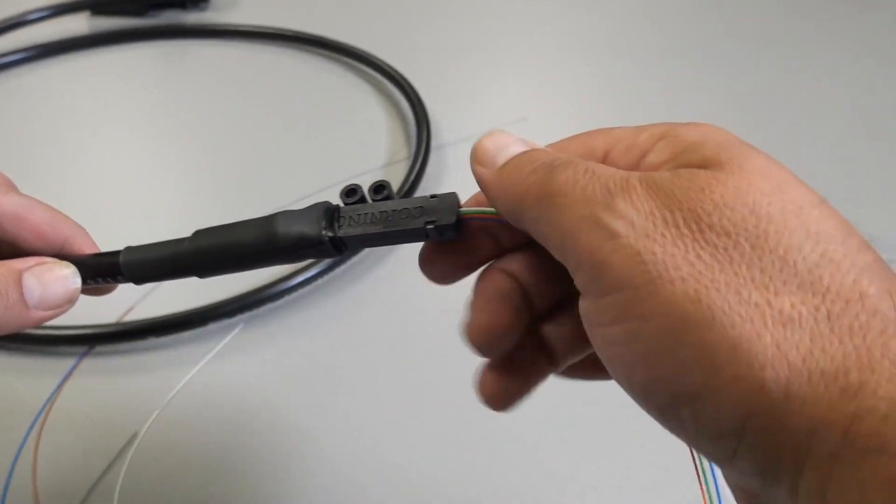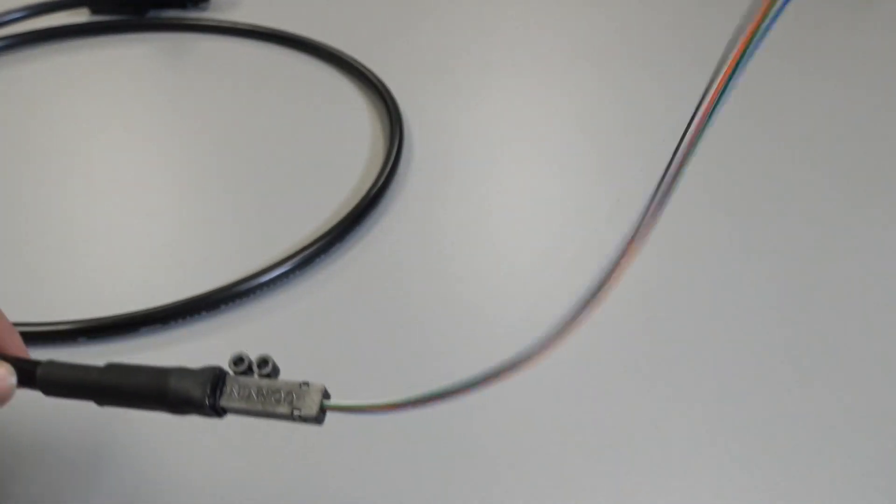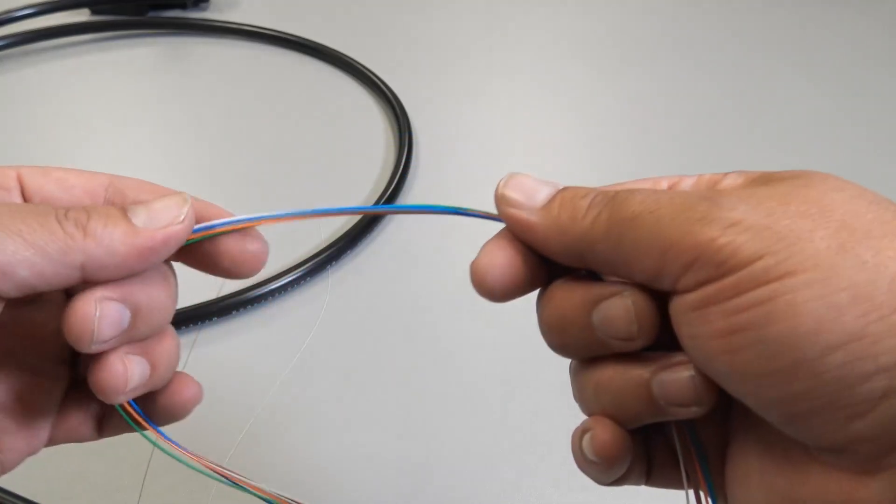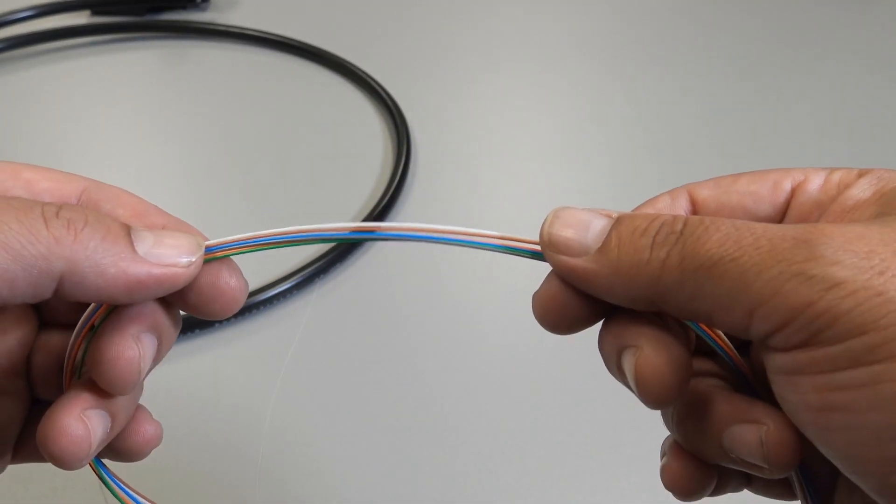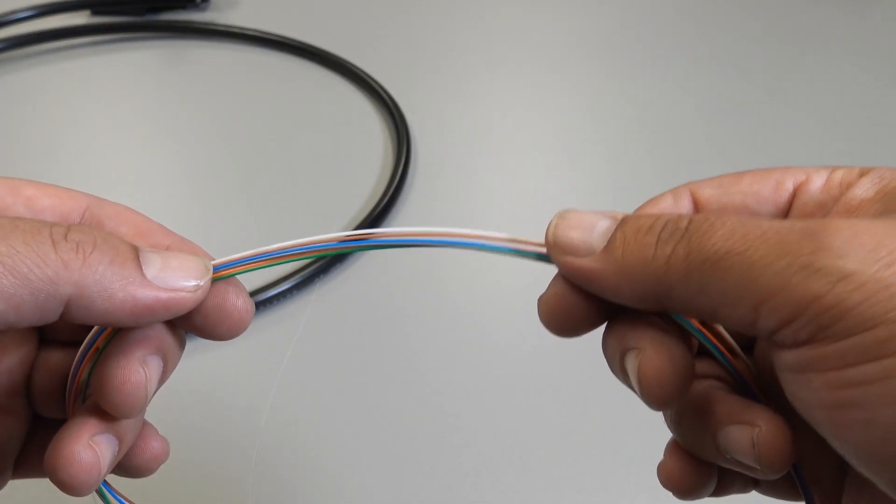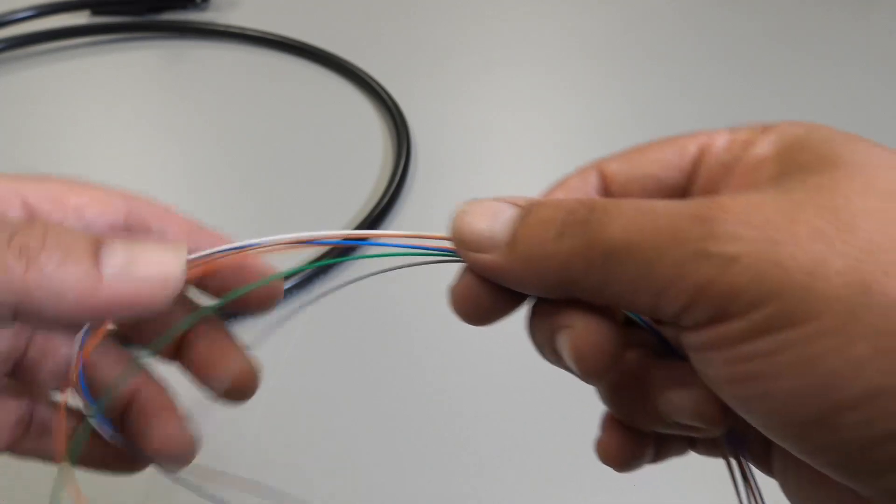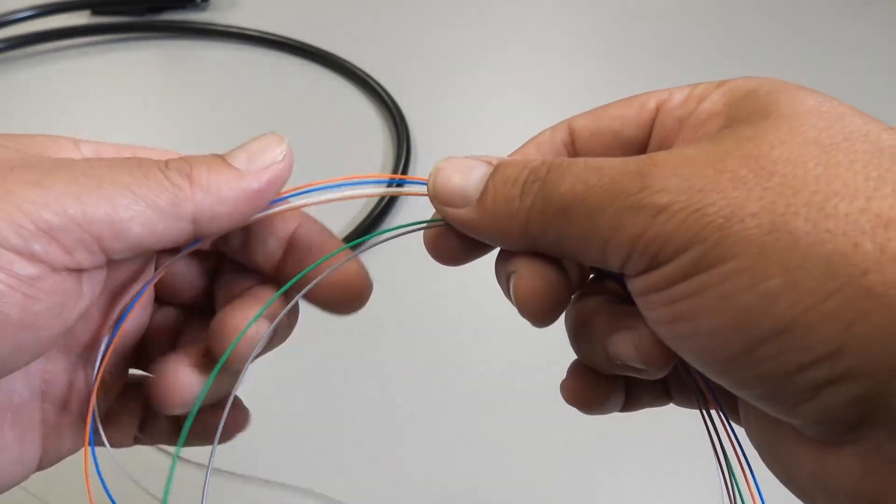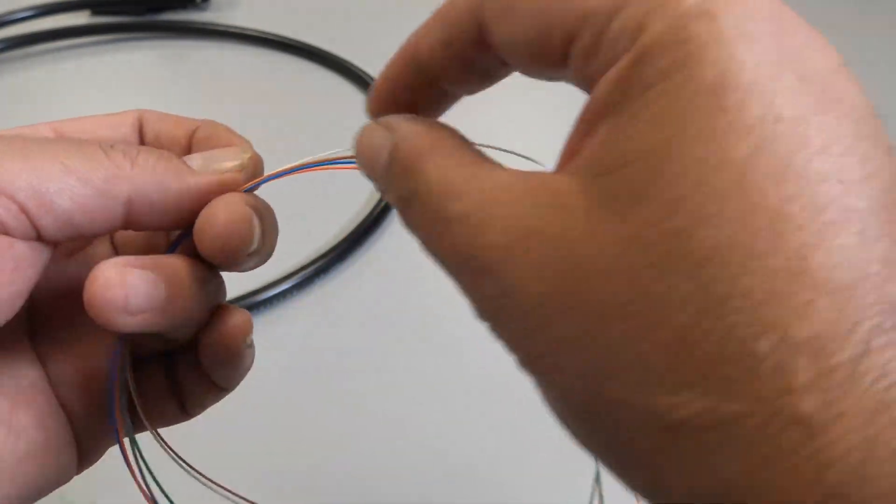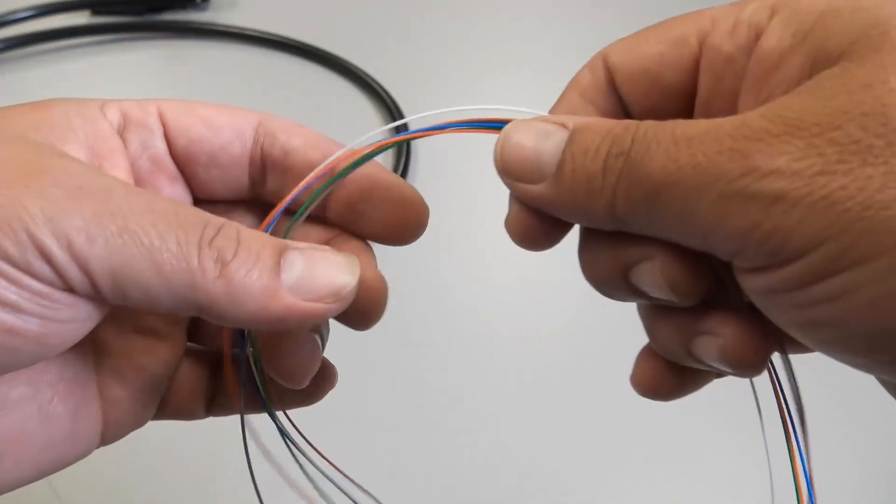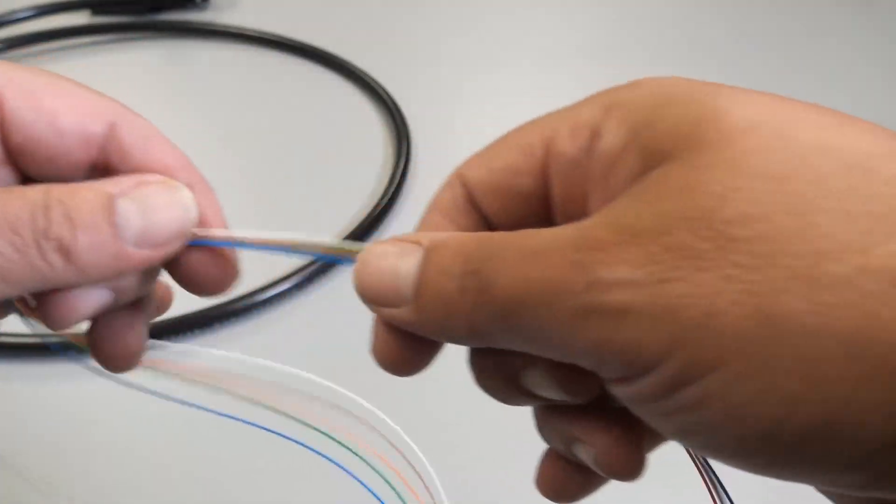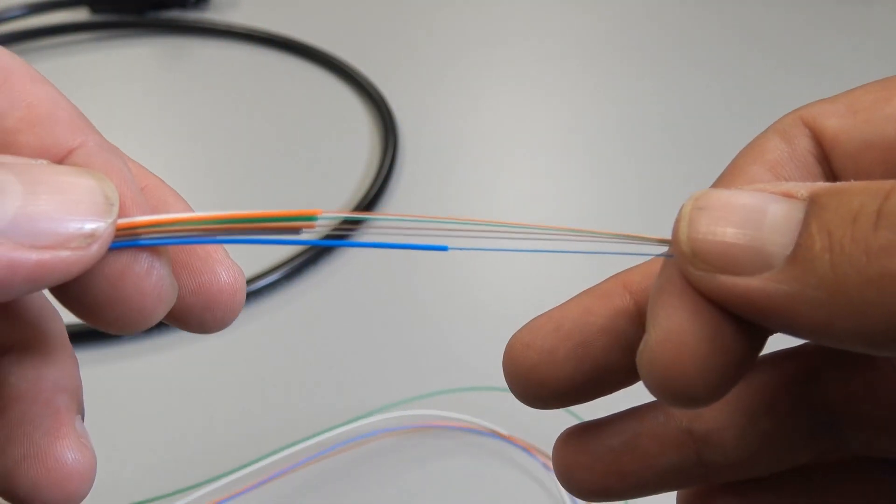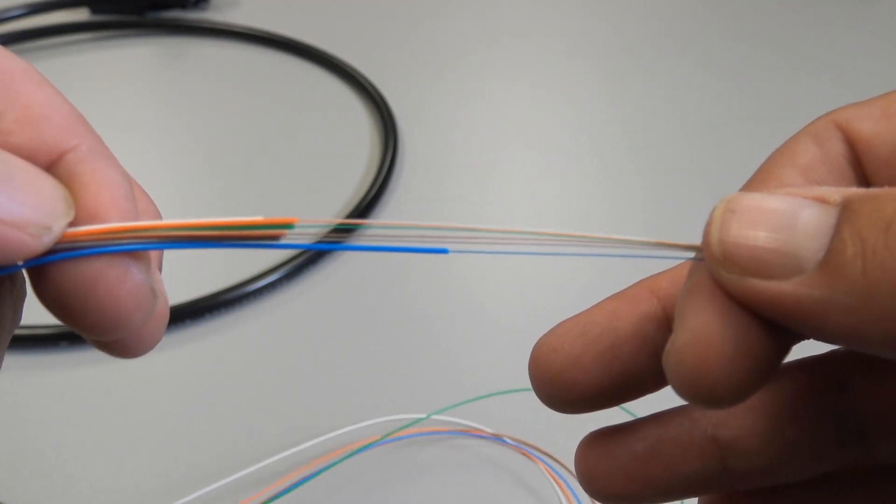The fan out kit is 900 micron size tubing. Loose tubes are always 250 size—a lot smaller. We have an outside plant cable going through this tube. It's straightforward: just slide each strand of 250 through it. As you can tell, the 250 to 900 is quite a size difference.